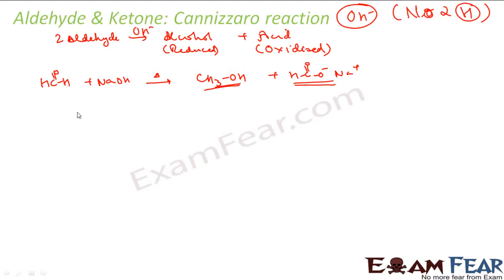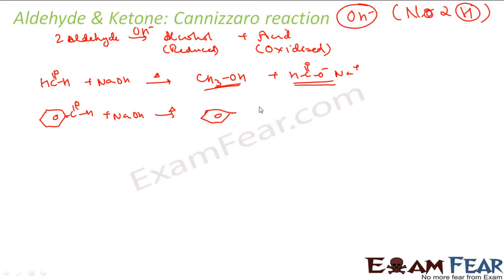Or, let's suppose I take benzaldehyde. I use NaOH and heat it — I'll get one alcohol (benzyl alcohol) and sodium benzoate. That is what I'll get.